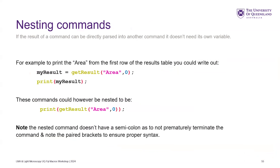We can nest commands. What I mean is if the result of a command can be directly passed into another command, it doesn't need to be defined as a variable. So we could have `my_result = getResult('Area', 0)` — that goes to the results table, looks at the column Area, and gets the first row value — then print that result. Or you could just say print the result of Area on the first row in a single line. This is good and technically runs slightly faster, which adds up over a hundred lines of code run a hundred times. One thing to note: you don't put a semicolon inside when you're trying to resolve this.